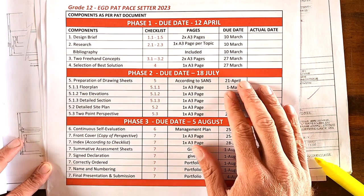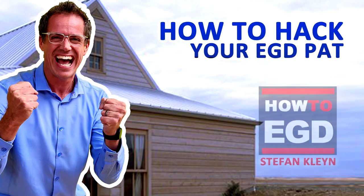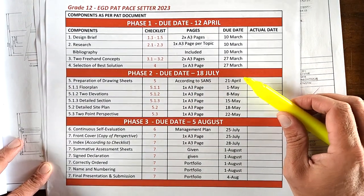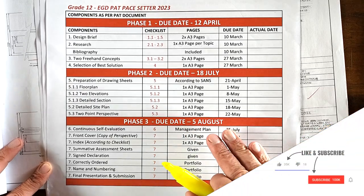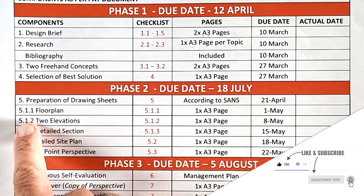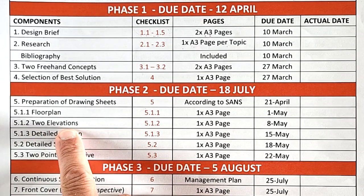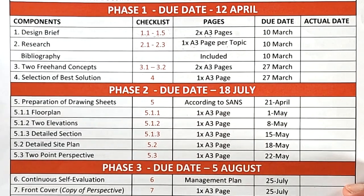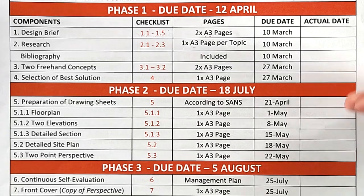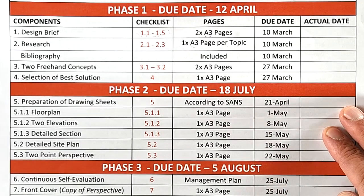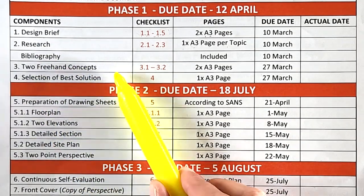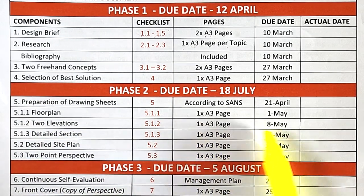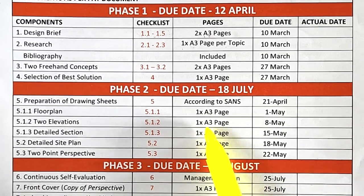Welcome again to the 'How to Hack Your PET' series, only on How To EGD, and of course only for Grade 12s doing the Civil PET in Engineering Graphics and Design. I've started this video on our pace setter and I'll be looking at exactly what the requirements are for 5.1.2 — the two elevations — as part of your PET. Here is the pace setter that details all the requirements and the different components. Previous sections have been discussed in videos: the design brief, research, freehand concepts, floor plan selection, and we're now at 5.1.2, detailing your two elevations, due around 8 May on one A3 page.